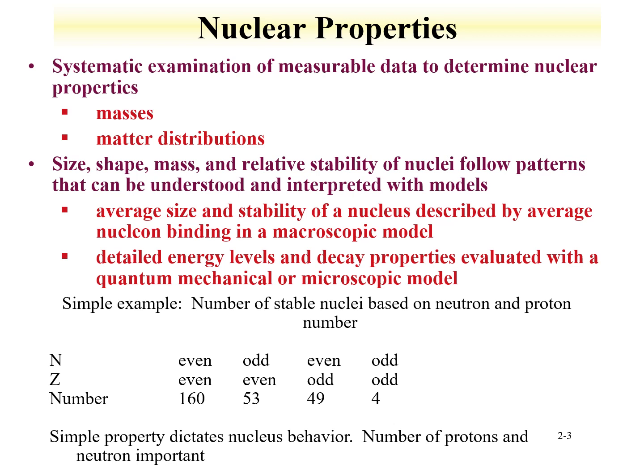Nuclear properties are basically derived from systematic evaluation of measured data—for instance, masses and how nuclear masses change. Imagine that you have an isotope and you keep adding a neutron to it: the element is the same, the neutron number changes. How does that mass change systematically by adding a neutron? One would think the mass increase would be based just upon that neutron addition, but it's actually a little different, because some of the nuclear mass can be converted into energy that helps keep the nucleus together. Fundamentally, size, shape, mass, and stability of nuclei follow patterns that can be understood.